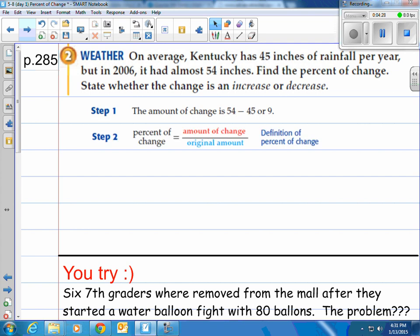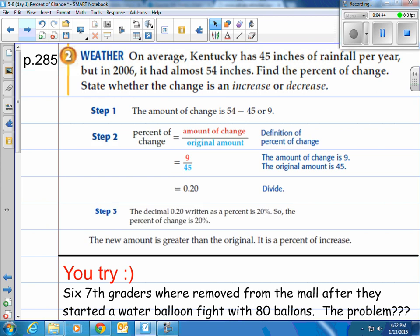Now we take the amount of change and put it over the original amount. So we have nine, and then we put it over the 45 inches, which is the original amount. Divide the nine, nine divided by 45, and we get 0.2. Move it over two spots, and we got 20%. And the new amount is greater than the original. Therefore, this is called the percent of increase. So we have a 20% increase in that rainfall.